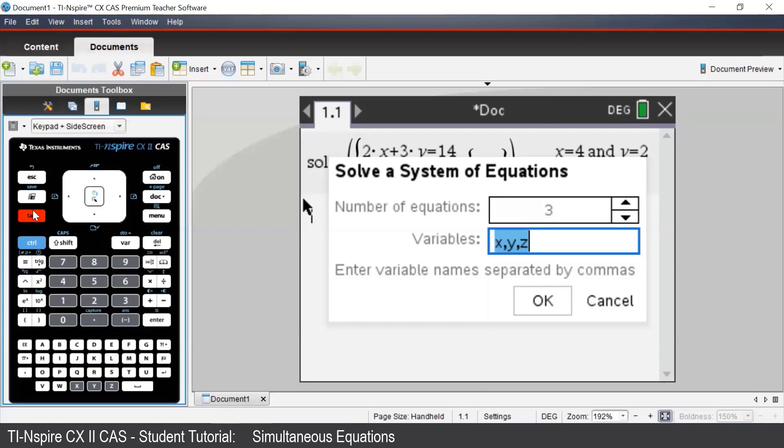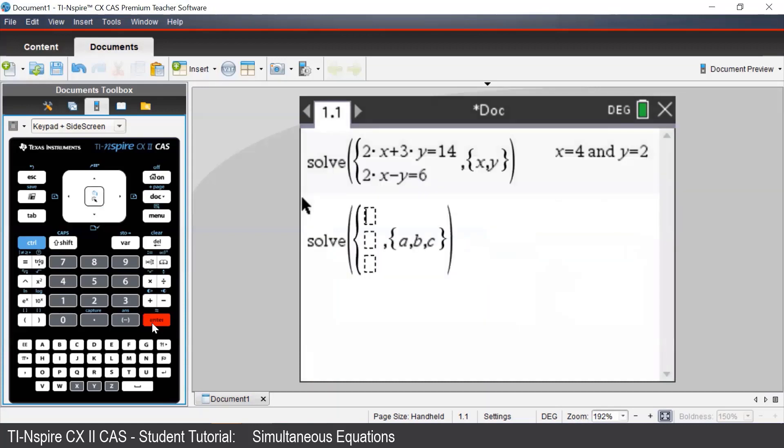Suppose instead of x, y, z, we want to solve for a, b, c. We would enter in a, comma, b, comma, c. Again, making sure that we put in a comma in between our variables, and press Enter.